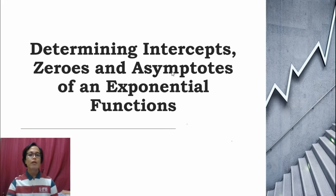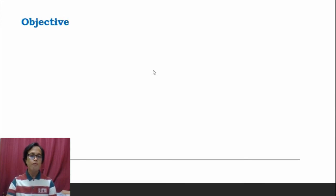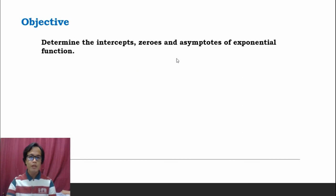Before we proceed to the examples, let us have first the objective for this video. At the end of this video, you should be able to determine the intercepts — the x-intercept and the y-intercept — the zero, and the asymptotes of an exponential function.